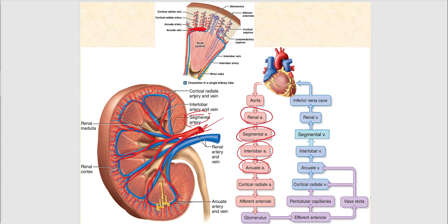From the cortical radiate artery, blood drains into the afferent arteriole, and then from the afferent arteriole into the glomerular capillary — we'll use that term rather than just glomerulus, and the reason will be explained later. The glomerular capillary is essentially part of the glomerulus.